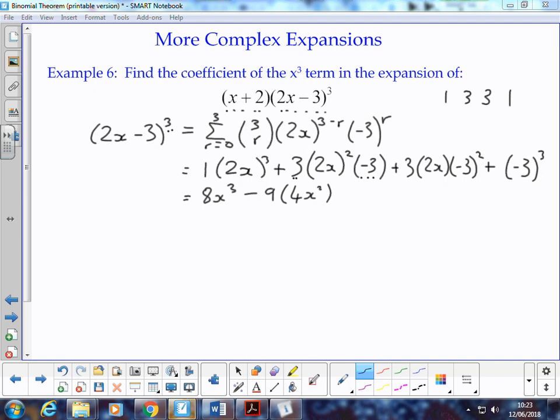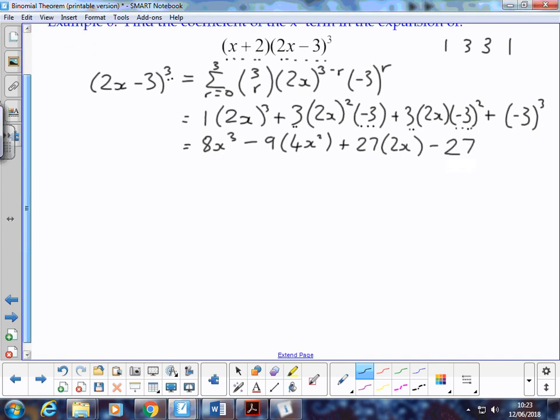The next term here, we've got 9 times 3 is 27 times 2x, and then we've got negative 3 cubed is negative 27. Don't rush it. It'll take as many steps as it takes to get it right. If you're trying to do too much in one go, that's when you make a mistake. So we could say that our expansion is 8x cubed minus 36x squared plus 54x minus 27.